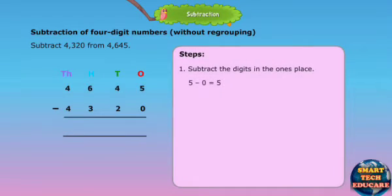Subtraction of 4 digit numbers without regrouping. Subtract 4,320 from 4,645. Steps: